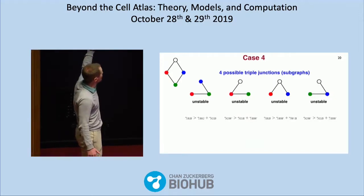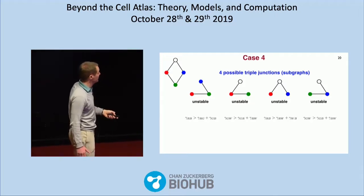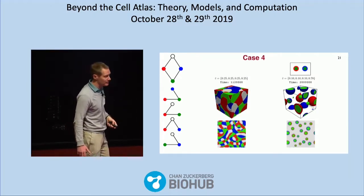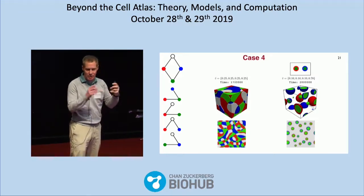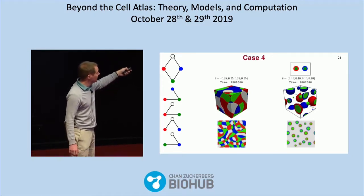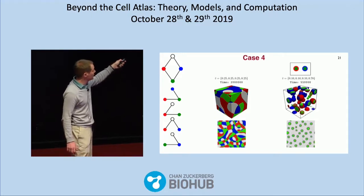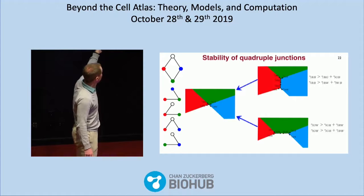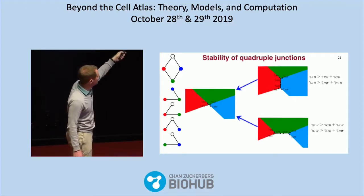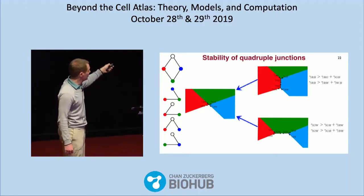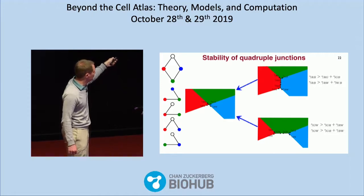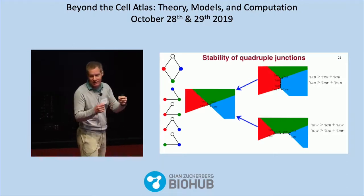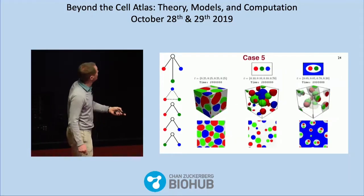A particularly interesting case is the diamond graph, where all triple junctions are unstable. Simulations with equal volume fractions produce stable quadruple junctions, both in 2D and 3D — which is unexpected, since normally you get stable triple junctions, not quadruple ones. These quadruple junctions are stable because any attempt to break them apart creates a new interface whose energy overpowers the existing ones and pulls the junction back together.